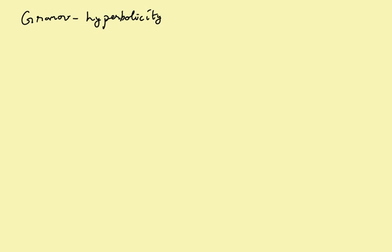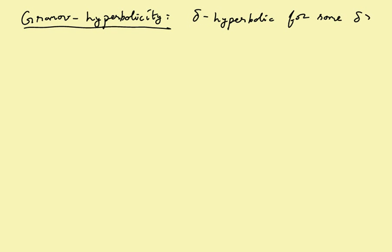Gromov hyperbolicity means being delta hyperbolic for some delta. What does this mean? It's usually just called delta hyperbolicity, though that suggests dependence on delta which sometimes matters. But normally we just don't care what delta is.